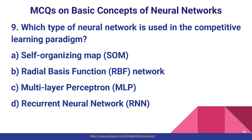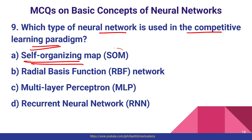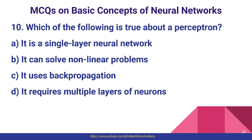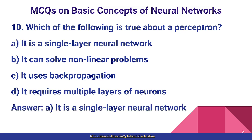Question number nine: which type of neural network is used in the competitive learning paradigm? In the competitive learning paradigm, we use self-organizing maps. Question number ten: which of the following is true about the Perceptron? Perceptron is a single-layer neural network and is the basic entity of an artificial neural network.